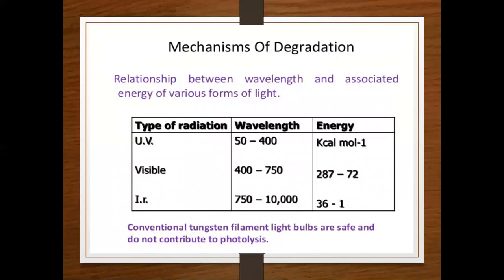Mechanism of degradation — the relationship between wavelength and associated energy: UV light has a wavelength of 50–400 nm; visible light is 400–750 nm with energy of 287–72 kcal/mol; infrared light is 750–10,000 nm with energy of 36–1 kcal/mol. Conventional tungsten filament light bulbs are safe and do not contribute to photolysis.